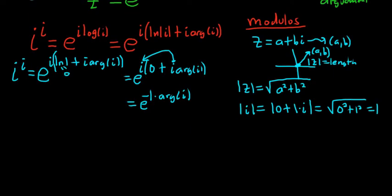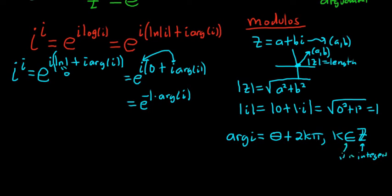So what is arg i? Arg i is called the argument. So arg i is equal to theta plus 2k pi, where k is an integer. k belongs to the set of integers. And this means belongs to or is in. So arg i is theta plus 2k pi. So what is theta? Theta is an angle between pi and negative pi. It's called the principal argument.